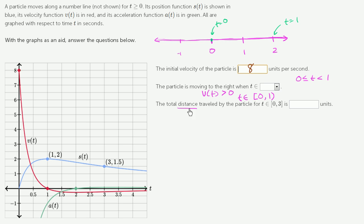The total distance traveled by the particle for t in the interval between 0 and 3 is blank units. So once again, I encourage you to pause the video and try to answer that. The total distance.